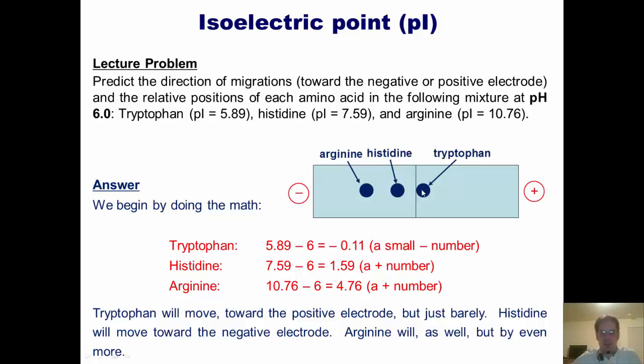So we would expect our gel to look something like this. Tryptophan just barely gets off the starting line, going toward the positive electrode. Histidine moves a little bit toward the negative, arginine moves more. That's it. Do I expect you to know how to do this? Abso-freaking-lutely. So that concludes today's lecture on isoelectric points and electrophoresis. I hope you've enjoyed it. Are you hungry? I am. I'm going to go back to the kitchen now and get myself some food. So much food, in fact, that I will likely injure both my colon and my esophagus. So until next time, enjoy the rest of your day.